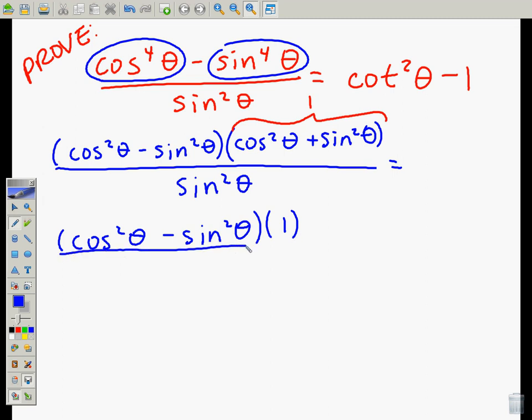So that makes our problem a whole lot simpler. We still have sine squared theta. And so now we're still trying to prove that it's equal to cotangent squared theta minus one.